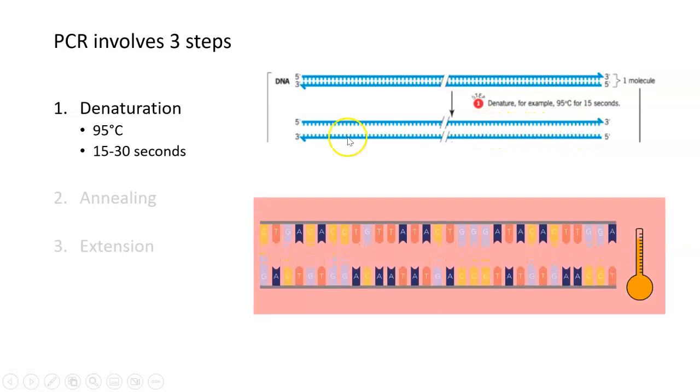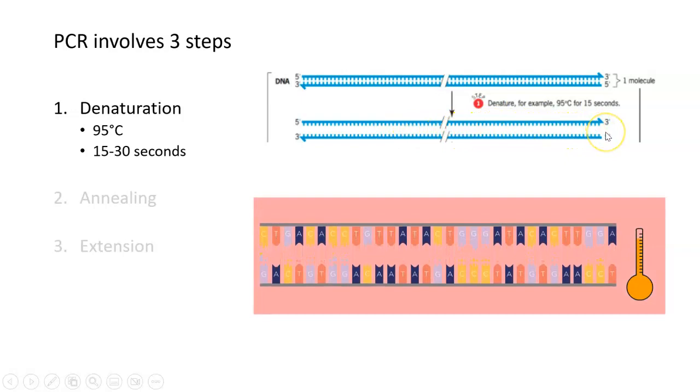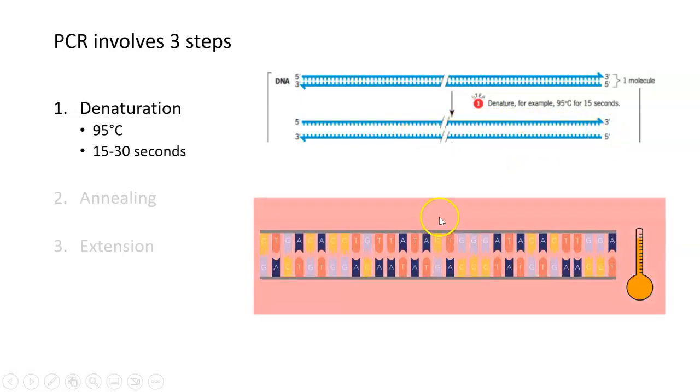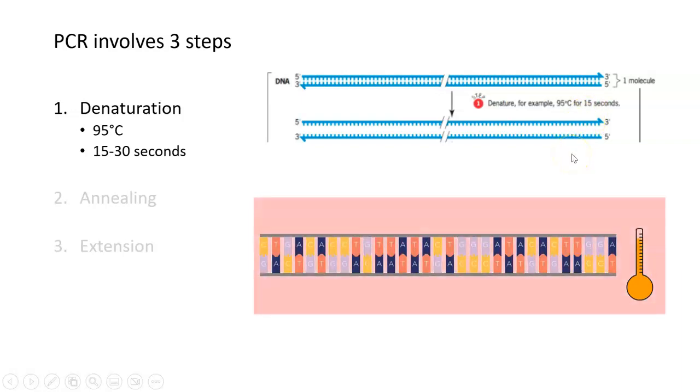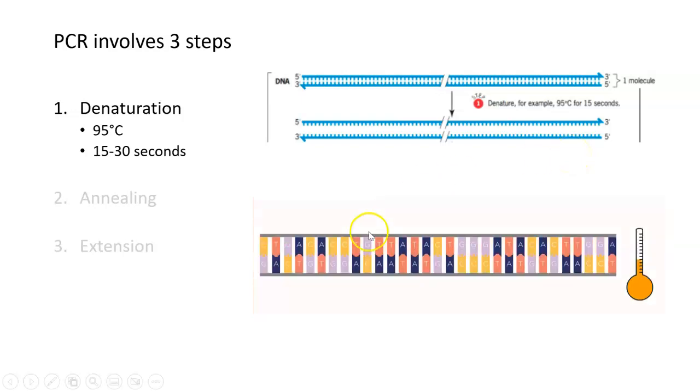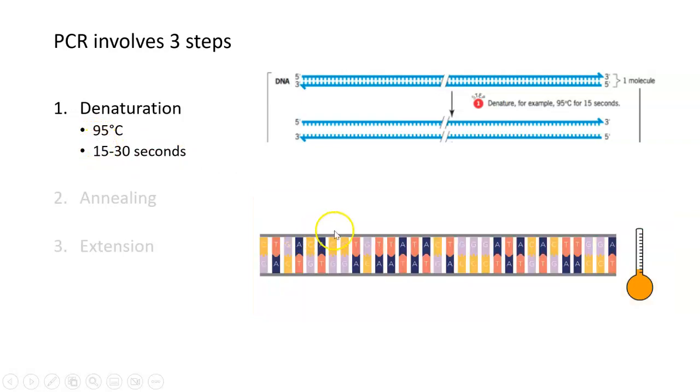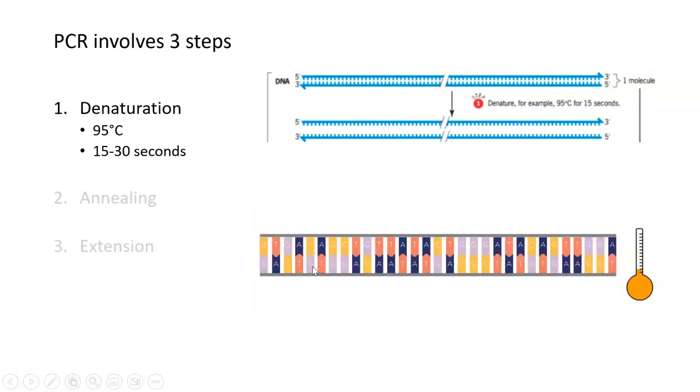A denaturation step is essential because 95 degrees Celsius, as a very high temperature, is actually high enough to denature the two strands of DNA or separate them from each other. It will break the hydrogen bonds that exist between the nitrogen bases in the double-stranded molecule and separate one strand from another. You don't want to do this for too long or you can end up melting your DNA irreversibly. This is quite a short step, but it's important because it allows enzymes access to the individual strands of DNA.